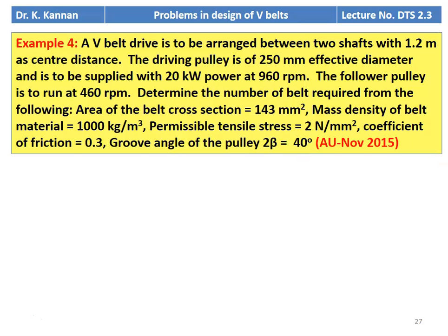Example number 4. A V-belt drive is to be arranged between two shafts with 1.2 meter center distance. The driving pulley is 250 mm effective diameter and is to be supplied with 20 kW power at 960 RPM. The follower pulley is to run at 460 RPM. Determine the number of belts required. Given: area of belt cross-section 143 mm², mass density 1000 kg/m³, permissible tensile stress 2 N/mm², coefficient of friction 0.3, groove angle 2β = 40°. This question appeared in the November 2015 question paper.